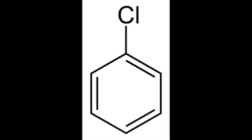Chlorobenzene is an aromatic organic compound with the chemical formula C6H5Cl. This colorless, flammable liquid is a common solvent and a widely used intermediate in the manufacture of other chemicals.